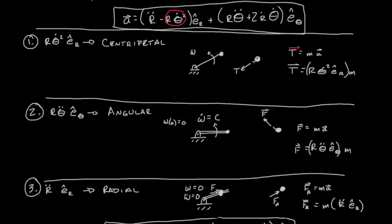This is pulling on the rope. Next was the angular acceleration. Here we're accelerating something around a pivot point and the force was going purely in the angular direction.